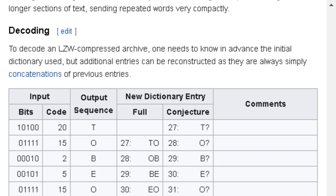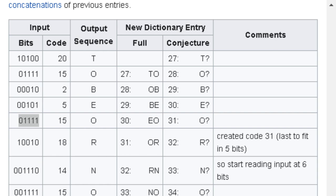Decoding: To decode an LZW compressed archive, one needs to know in advance the initial dictionary used, but additional entries can be reconstructed as they are always simply concatenations of previous entries. With our table, we have four main columns: Input, Output Sequence, New Dictionary Entry, and Comments. The column Input is subdivided into bits and codes, and the column New Dictionary Entry is subdivided into full and conjecture.